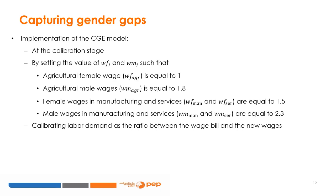By doing this, we introduce wage differentials between male and female workers but also differences in the number of workers, or labor units, in each of the three sectors for male and female labor. It should be noted that it is possible to use the actual number of workers to calibrate labor demand, and afterwards calculate the wage rate by using the ratio between wage bill and number of workers.